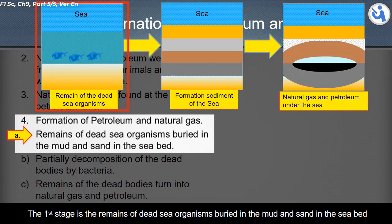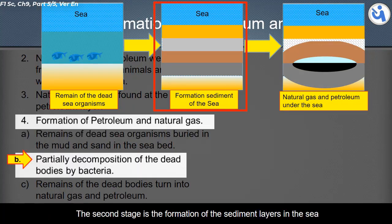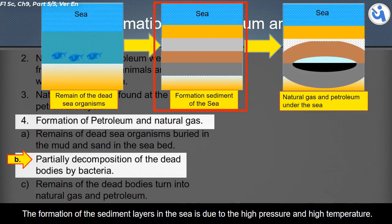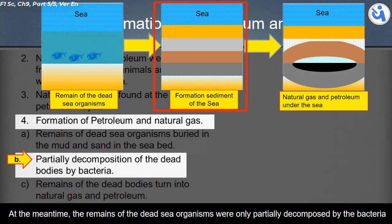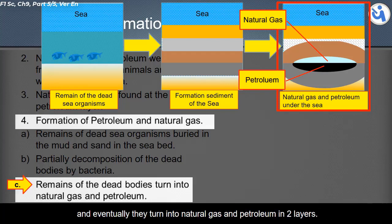The first stage: the remains of dead sea organisms are buried in the mud and sand of the sea bed millions of years ago. The second stage: sediment layers form in the sea due to high pressure and high temperature. Meanwhile, the remains of the dead sea organisms were only partially decomposed by bacteria. The remains of the dead organisms also experience high pressure and high temperature, and eventually turn into natural gas and petroleum in two layers, with natural gas found on top of the petroleum.